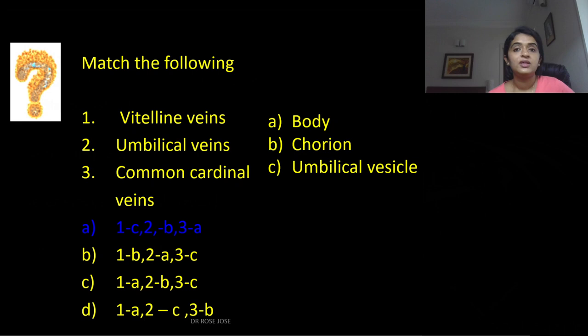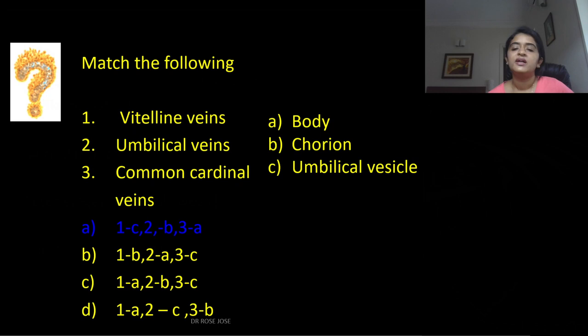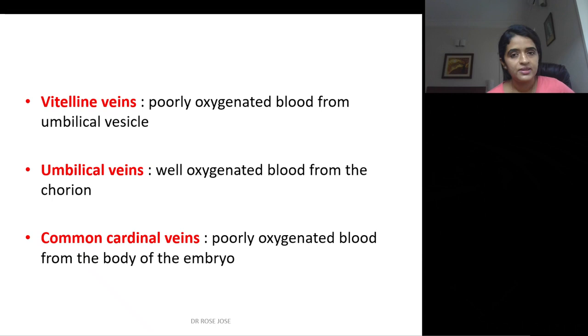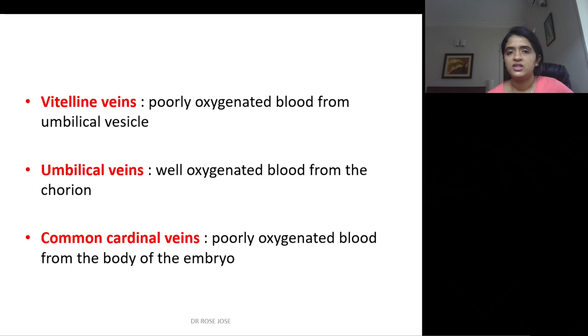Match the following — three main vessels: vitelline veins, umbilical veins, and common cardinal veins. The vitelline veins come from the umbilical vesicle. The umbilical veins come from the chorion. The common cardinal veins come from the body wall. The vitelline veins carry poorly oxygenated blood from the umbilical vesicle. The umbilical veins carry well-oxygenated blood from the chorion through the placenta. The common cardinal veins receive poorly oxygenated blood from the rest of the embryo's body.